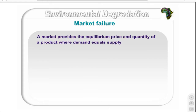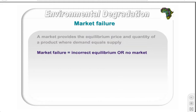As you are aware, a market is the place where the demand and supply of a good is determined, where supply and demand are equivalent and an equilibrium price and quantity occurs. Market failure exists where there is either an incorrect equilibrium point — that is, all the costs and benefits are not taken into account — or if no market exists.